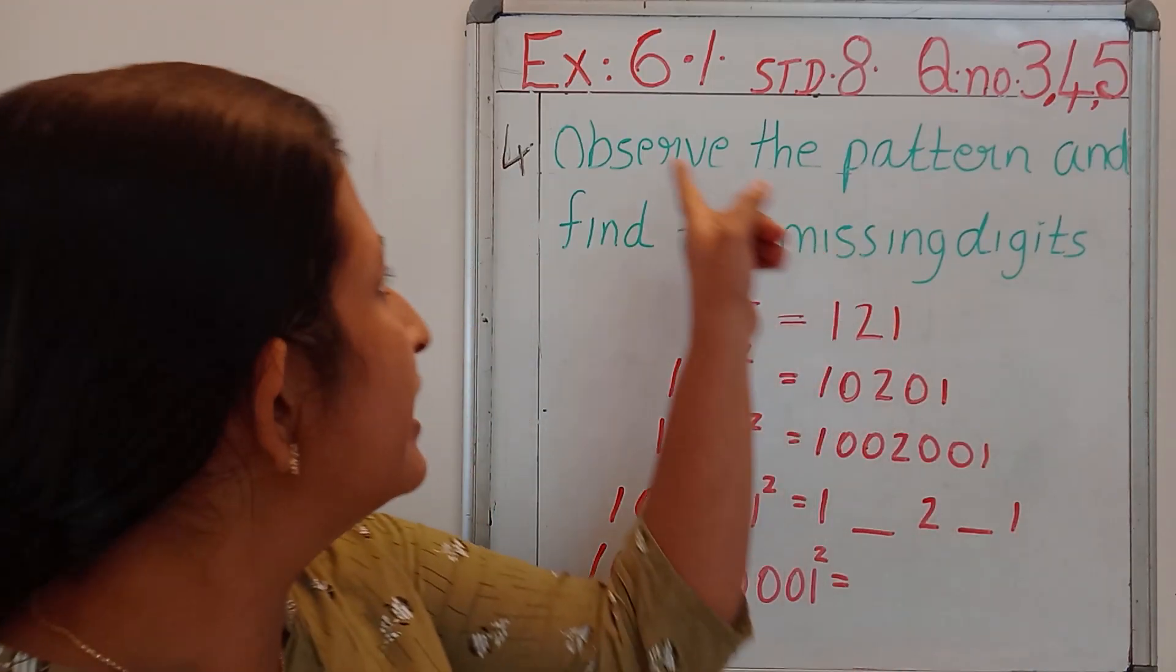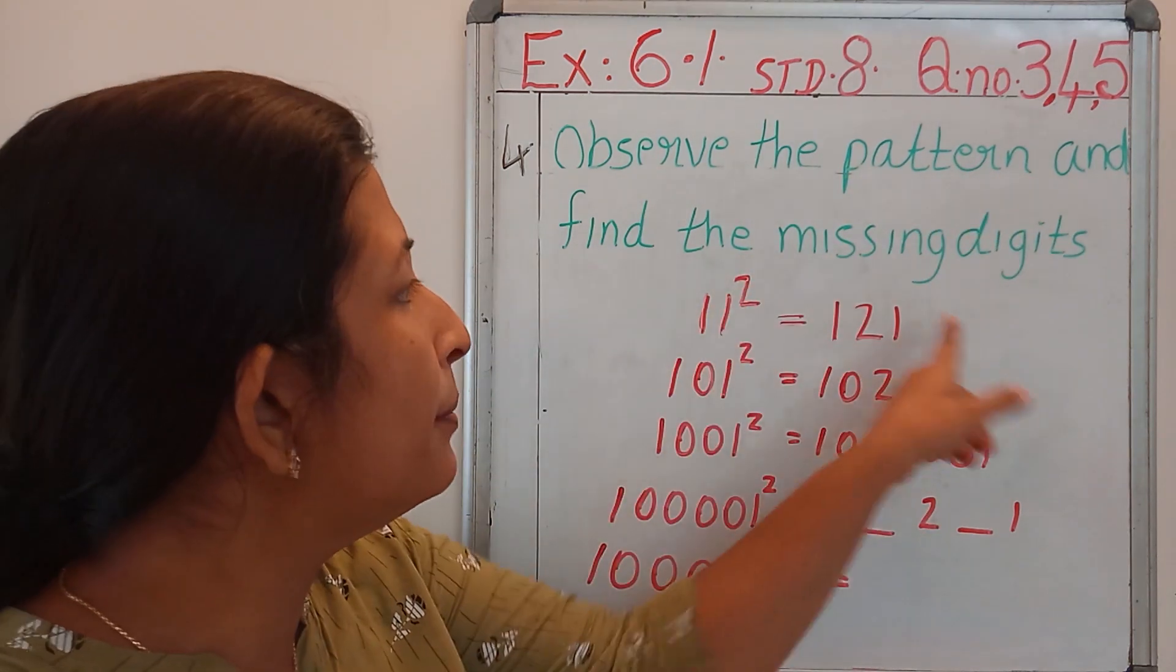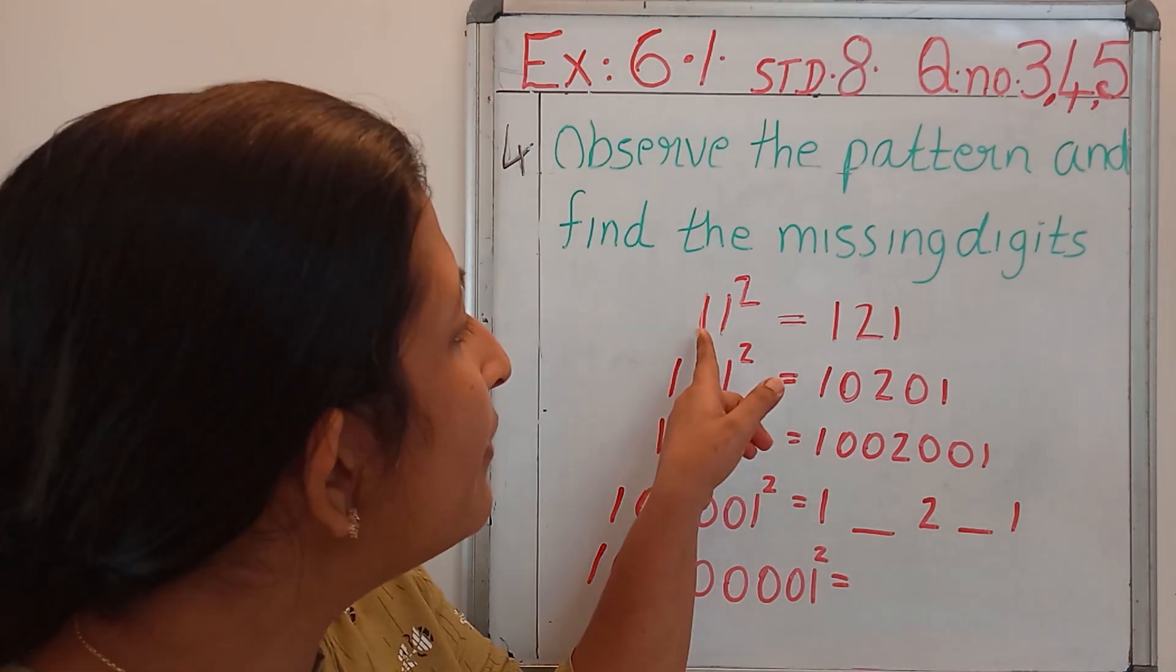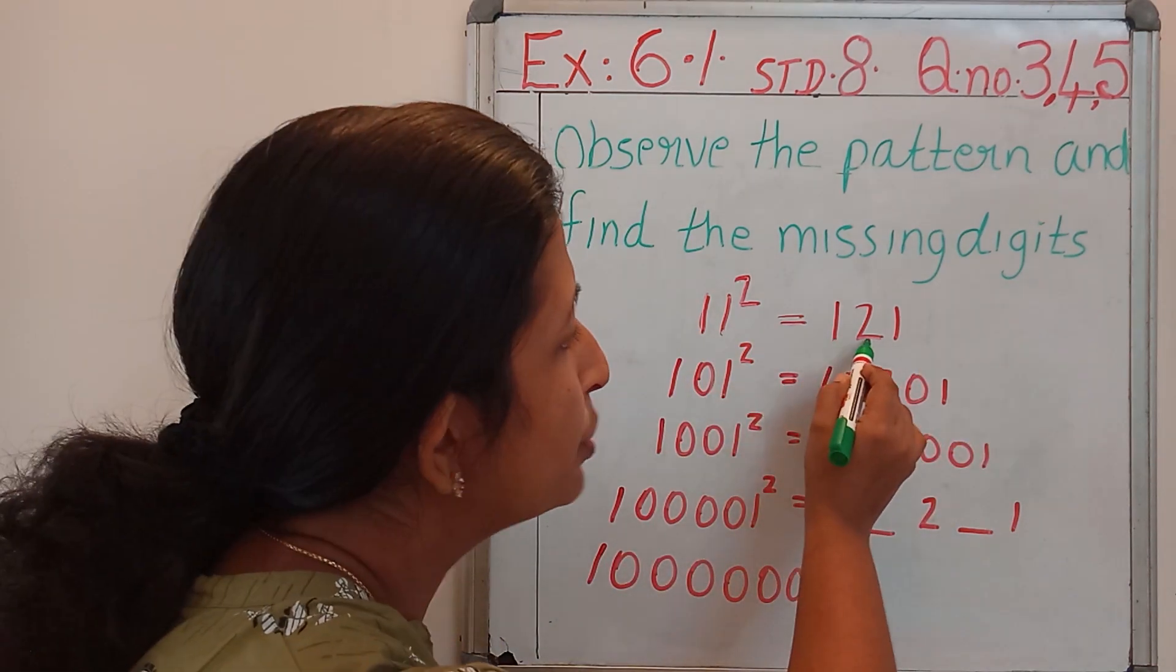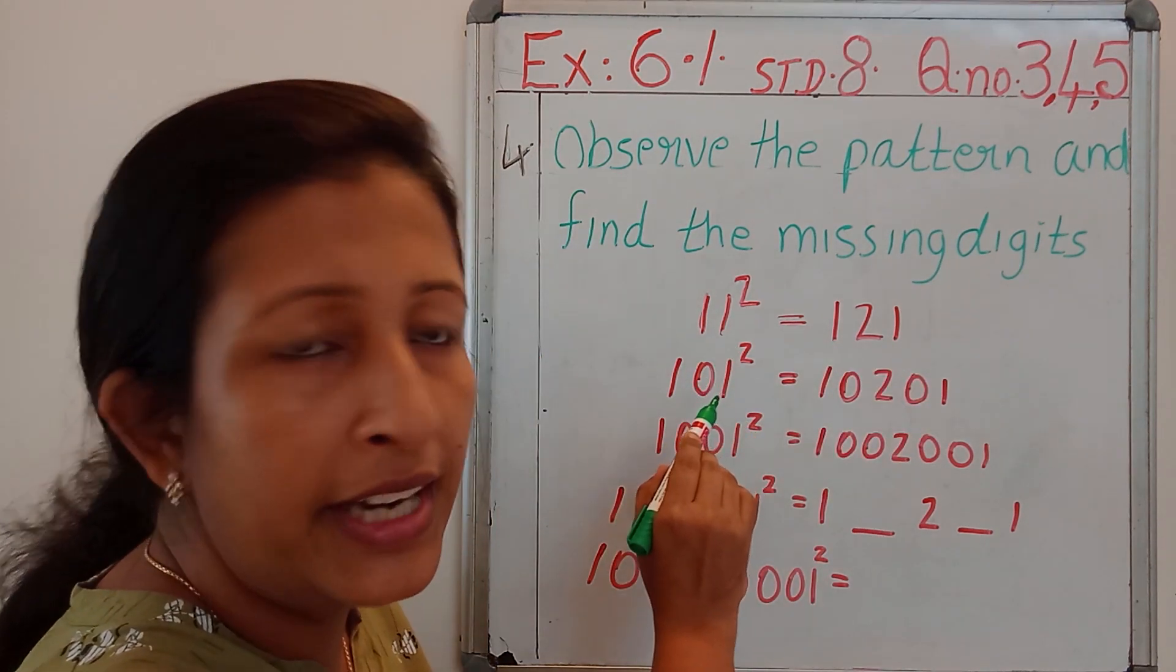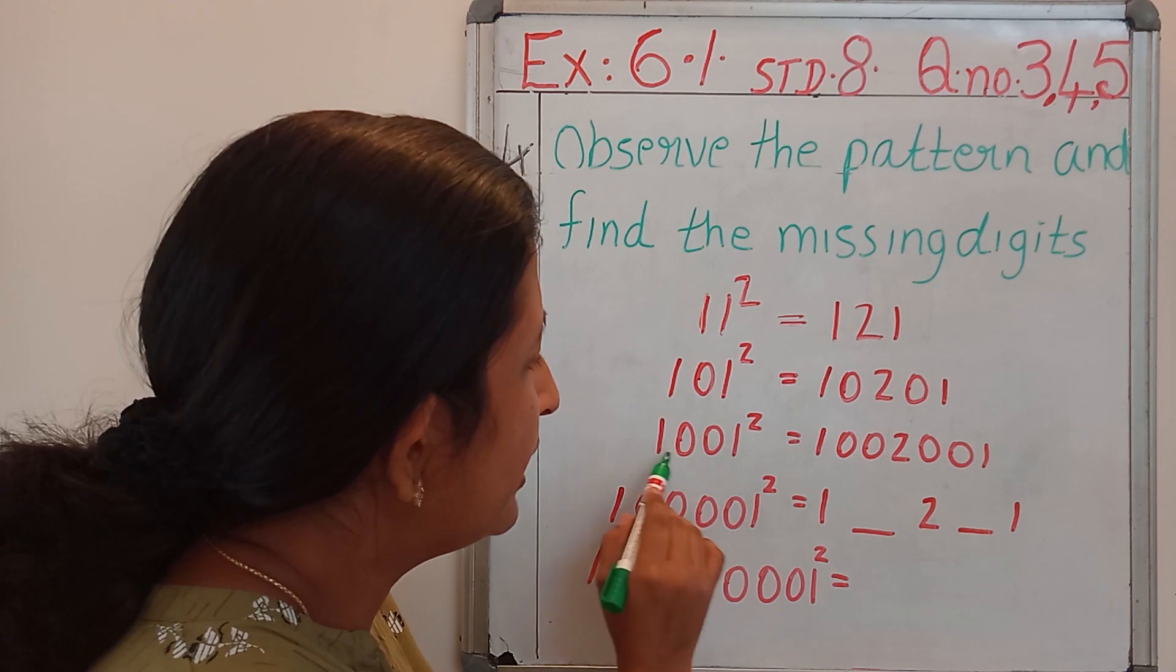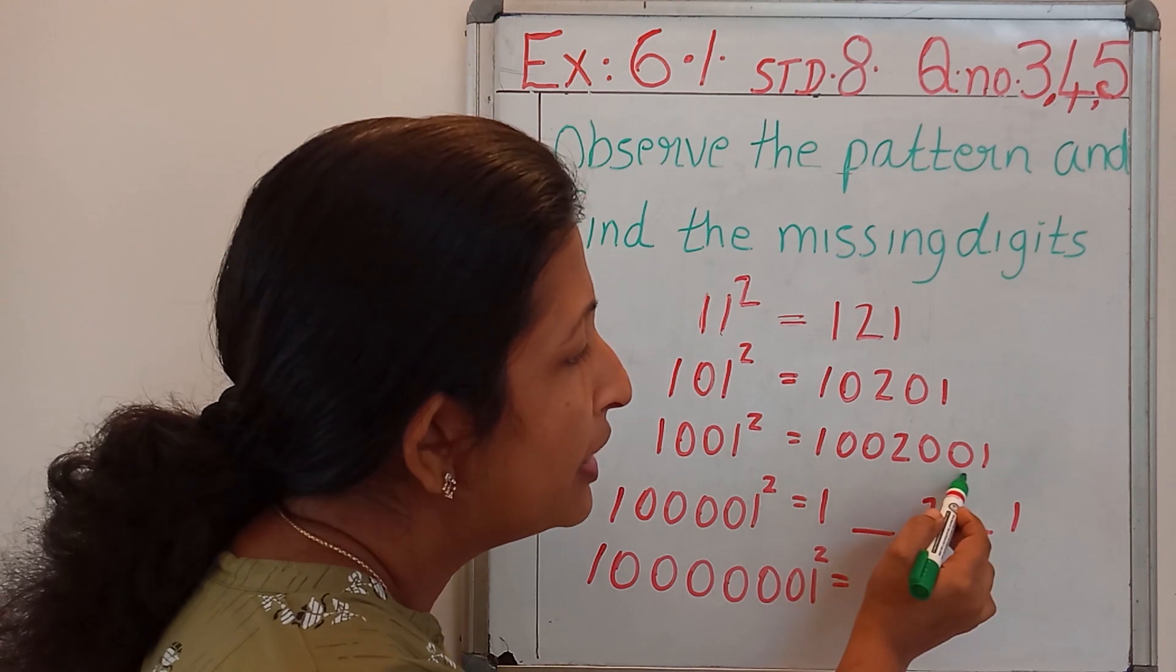Question number 4 says: observe the pattern and find the missing digits. See, here the numbers are missing. First we can check the pattern. 11 square equals 121. 101 square equals 10201. 1001 square equals 1002001.